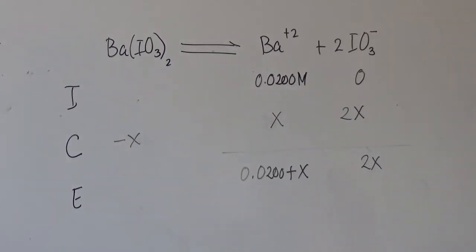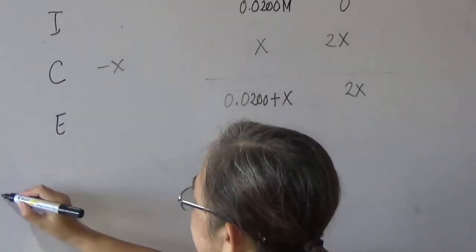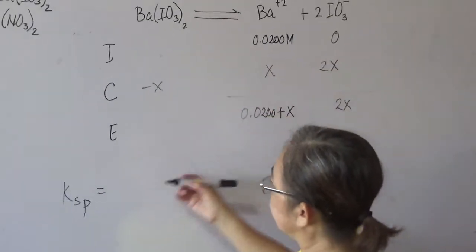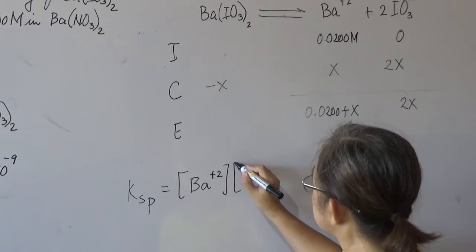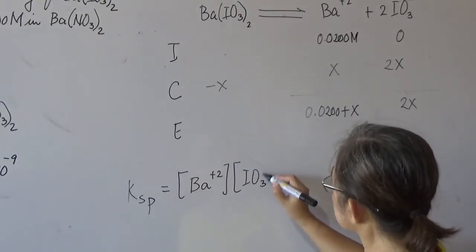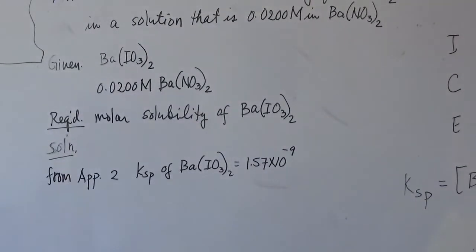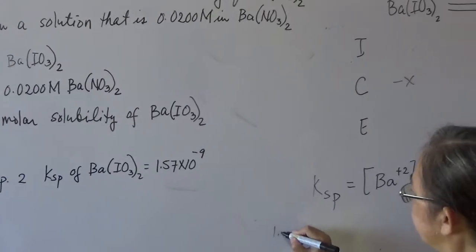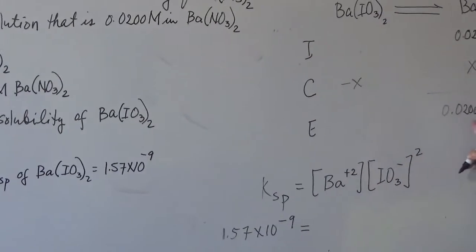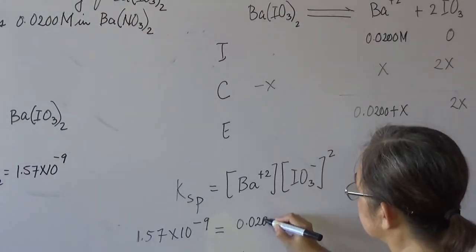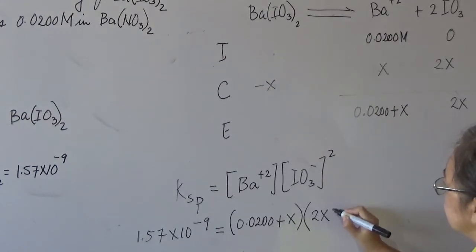From the Ksp expression: Ksp = [Ba²⁺][IO₃⁻]². Substituting equilibrium values: 1.57 × 10⁻⁹ = (0.02 + X)(2X)². Expanding, this gives a cubic equation in X with a 4X³ term.